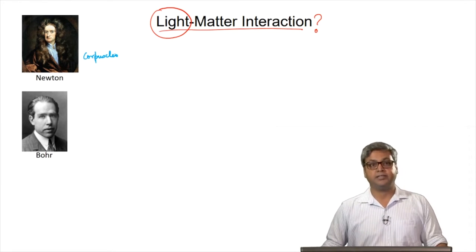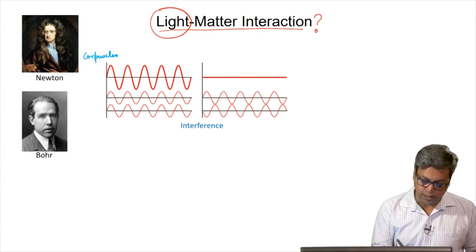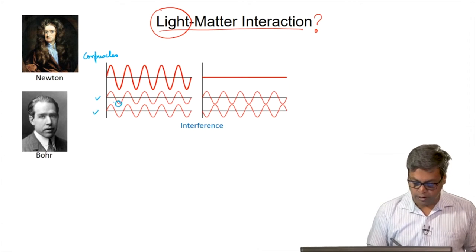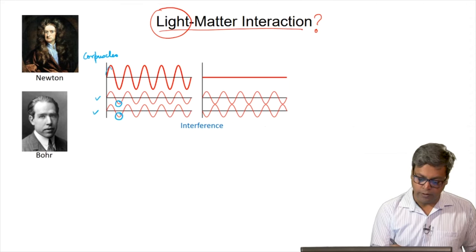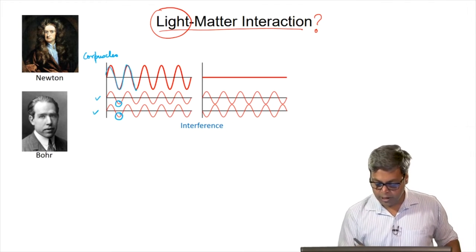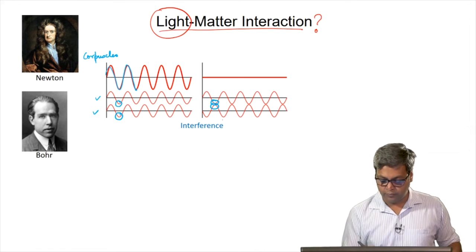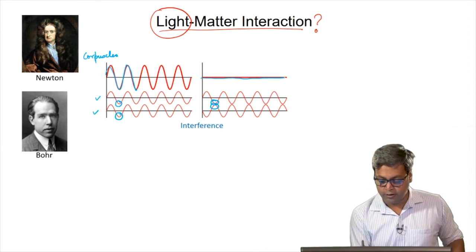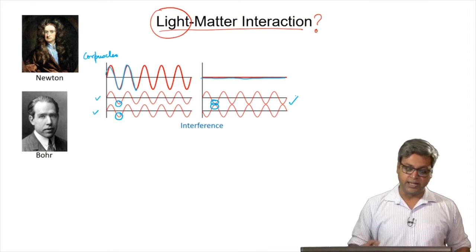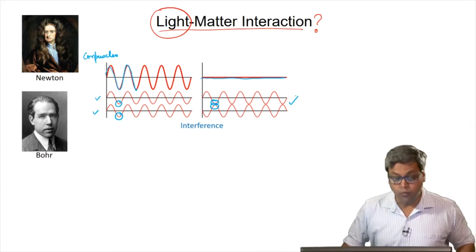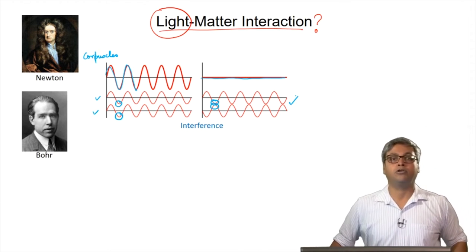Another thing — light makes interference patterns, which are undulations of two waves that occupy the same space. Here we have two waves: we can see the minima of wave 1 is coinciding with the minima of wave 2. So when we add these two waves, we get a bigger wave — this is constructive interference. On the other hand, in the second example, the minima of wave 1 is coinciding with a maxima of wave 2. So when we add these two waves, they cancel out one another — this is called destructive interference. We can see waves only make interference patterns and particles don't. So in the 19th century, light was thought of as a wave.